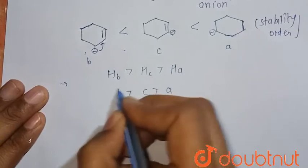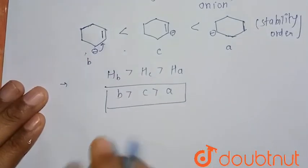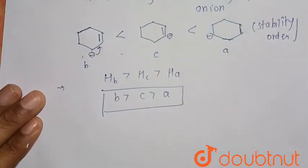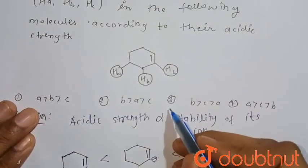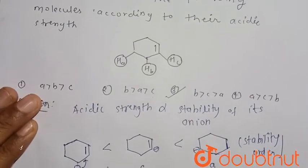This is the correct order of the acidic strength of the respective hydrogen. So option number third would be the right choice. Thank you.